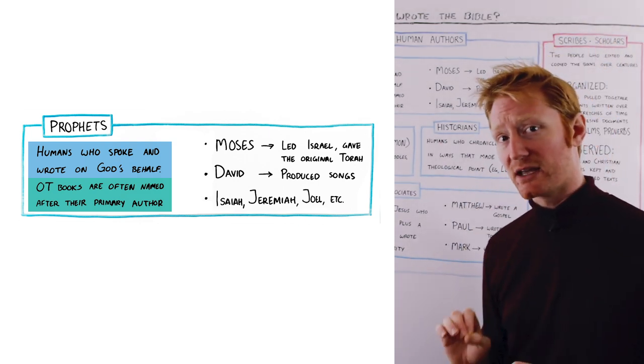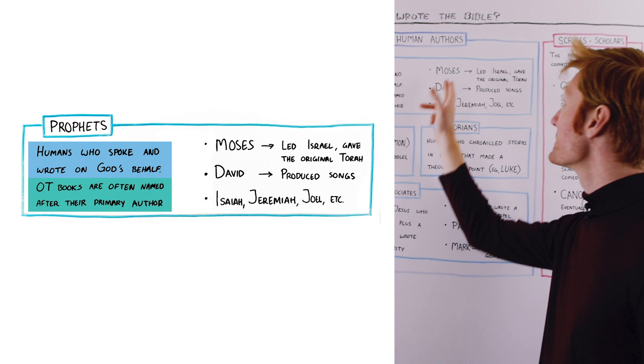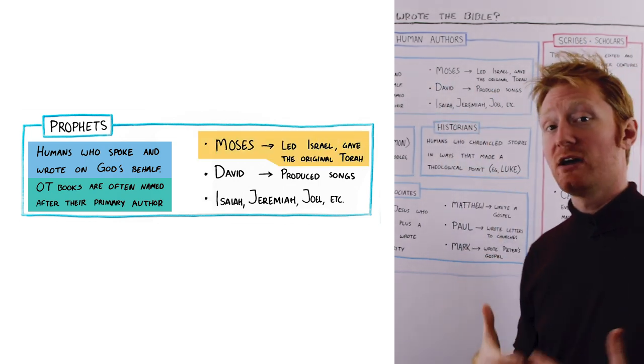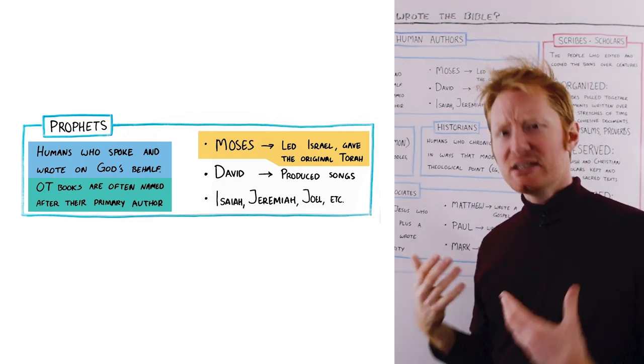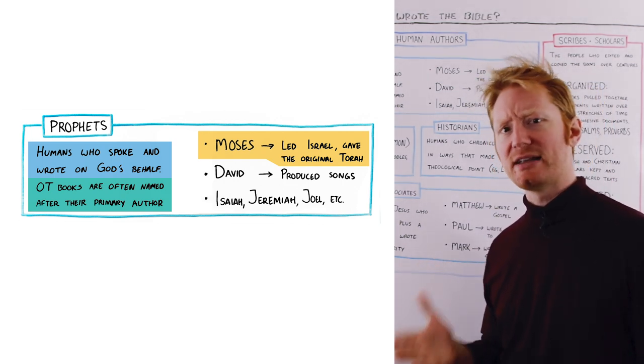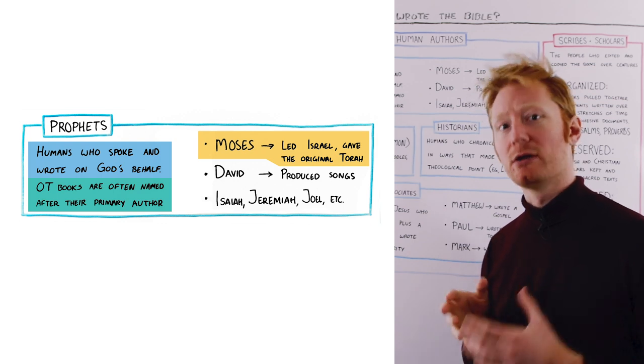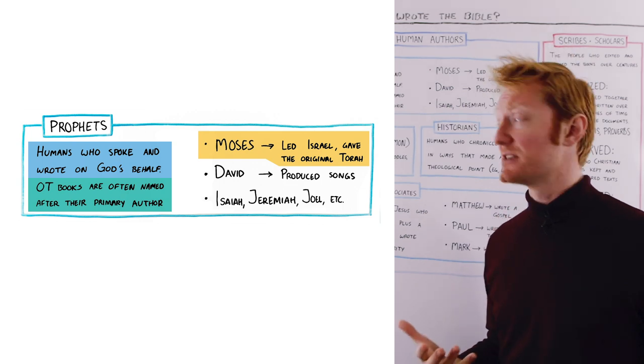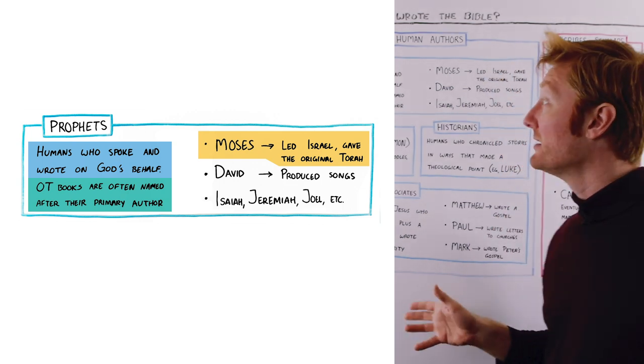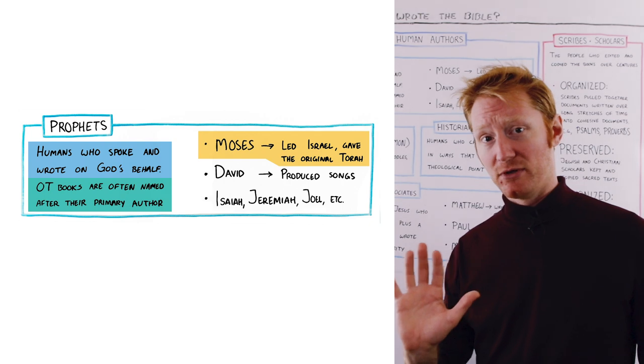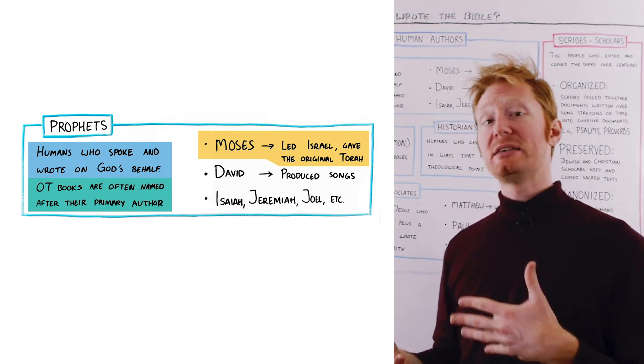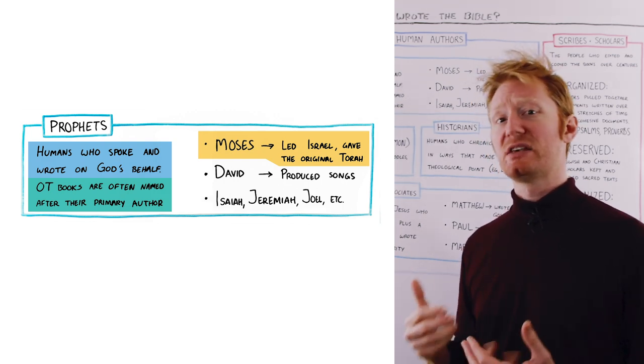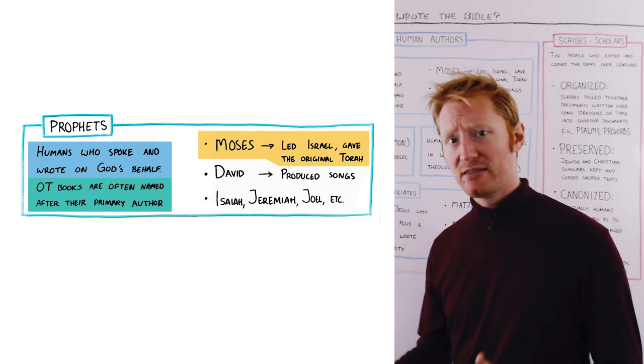Some examples of prophets that contributed to Scripture. We have Moses. He's the person who led Israel out of Exodus, up to the edge of the Promised Land. He's credited with giving the Israelites that original Torah, the original laws from God. He made several agreements with the people of Israel. And in those first five books of the Bible, which is what we call the Torah today, we see a couple of actions, or there are a couple of episodes in which Moses is writing down things that are happening.